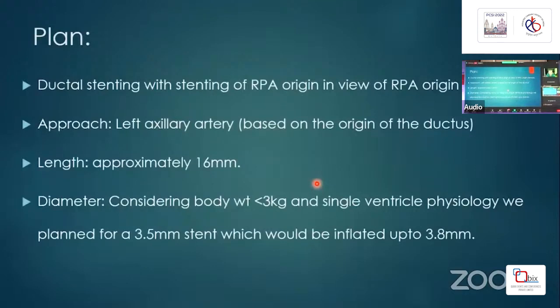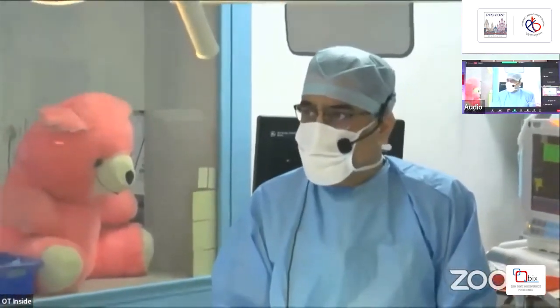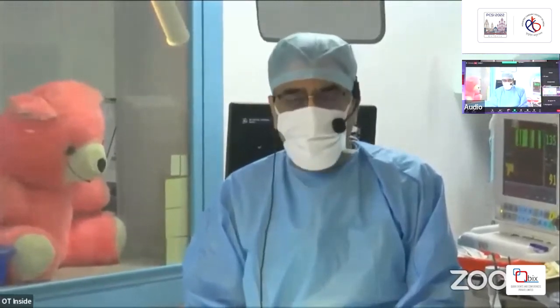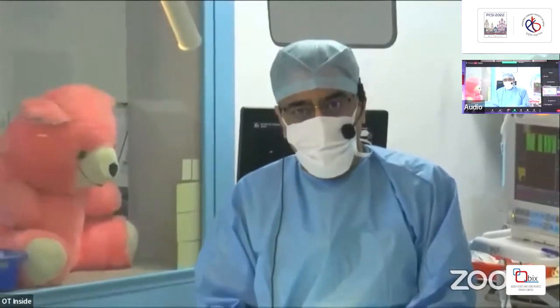Given the child weighs less than 3 kg with single ventricle physiology, we are planning a stent of 3.5 mm inflated up to 3.8 mm. For anesthesiology, we induce the patient and once stabilized on the ventilator, we take a neck line in a sterile fashion and put inotropes — noradrenaline and adrenaline prophylactically — in one lumen of the triple lumen, then stabilize and transfer to the cath lab.